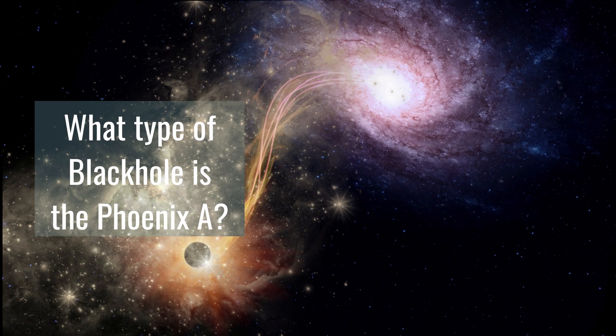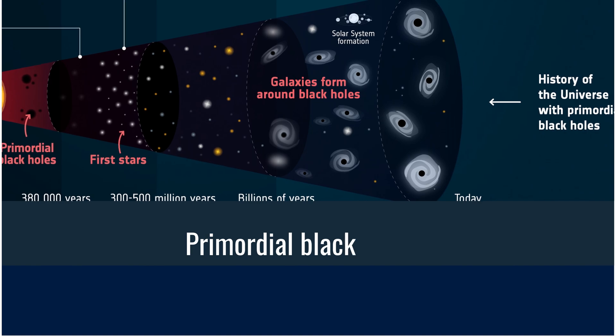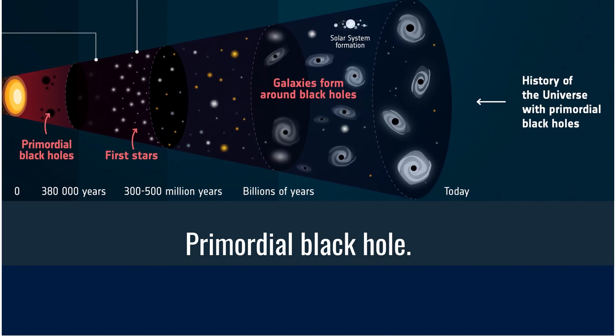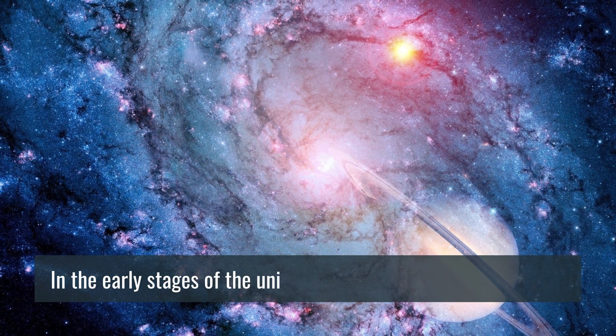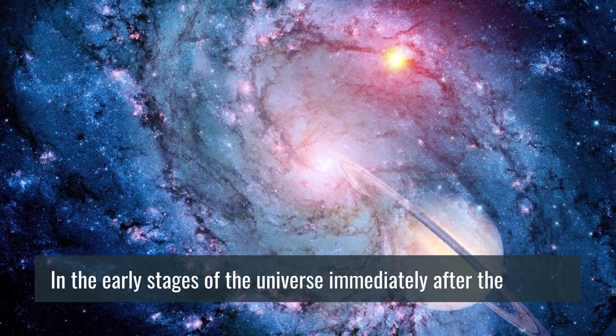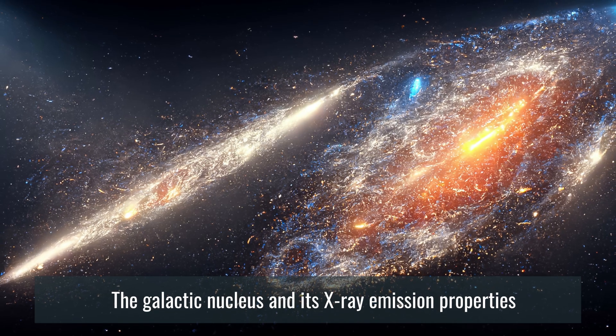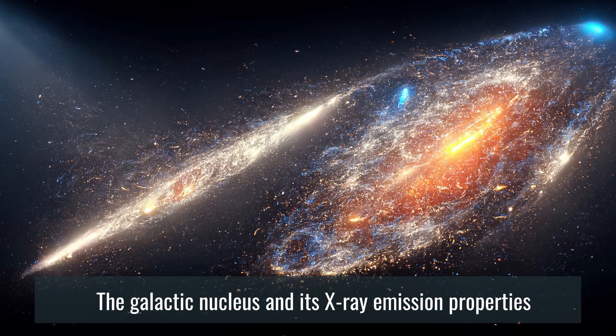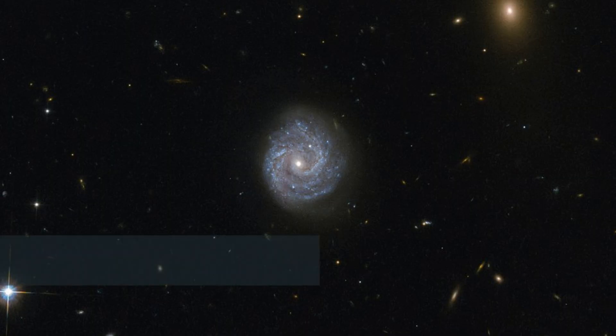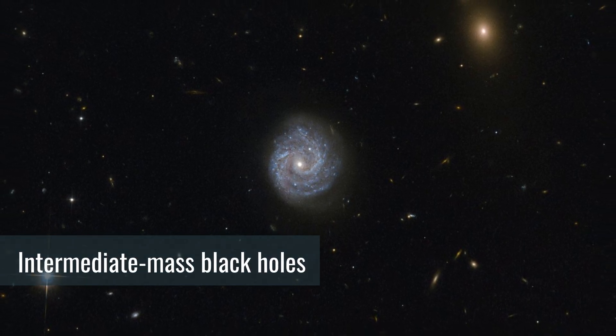But what type of black hole is Phoenix A? Phoenix A is a primordial black hole, which means it was formed in the early stages of the universe immediately after the Big Bang. Phoenix A is a unique black hole due to its location in the galactic nucleus and its X-ray emission properties, which are distinct from other known types of intermediate-mass black holes.